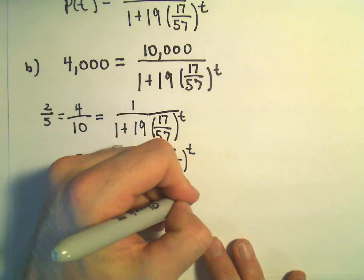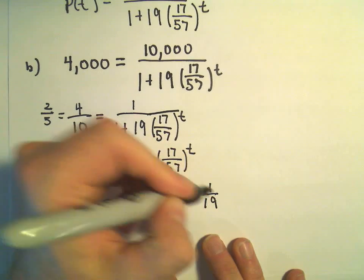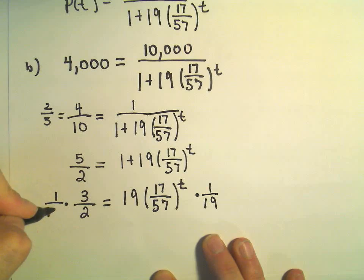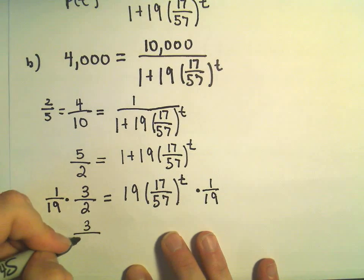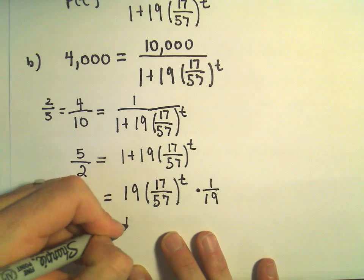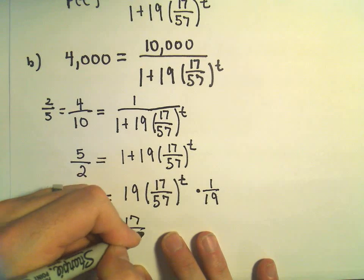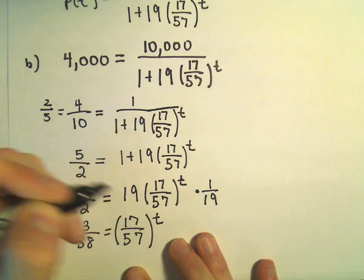Again, to get rid of the 19, we can just multiply both sides by 1 over 19. Alright, so that's going to give us 3 over 38 equals 17 over 57 raised to the t.